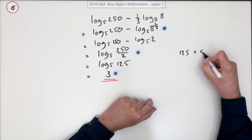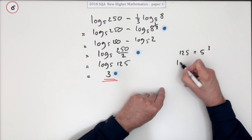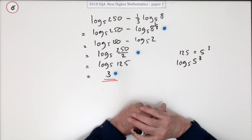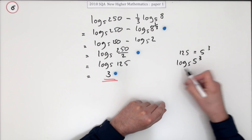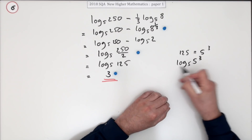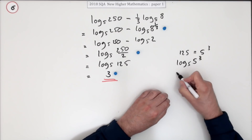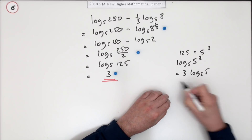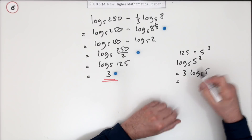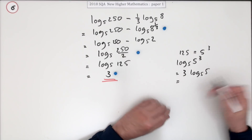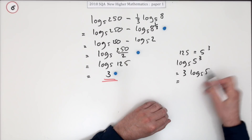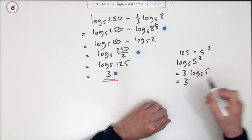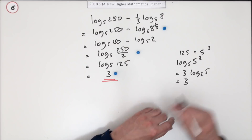If you say 125 is 5 to the power of 3, that means log base 5 of 5³ is what you've got. The log is shouting: that's what I'm here for — I tell you what the power is. You bring the 3 to the front, giving you 3 times log base 5 of 5. And log base 5 of 5 is always 1 because 5 is 5 to the power of 1. So the answer is 3.